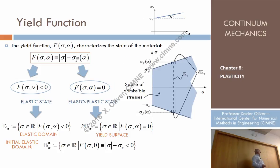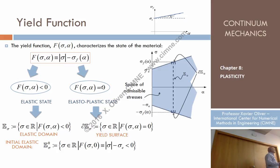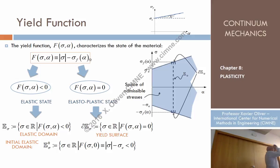Whenever we replace stress and alpha into the yield function and the result is zero, we say the material is in the elastoplastic regime. And we never allow this function to be greater than zero — that is our fundamental constraint.